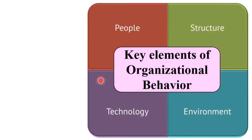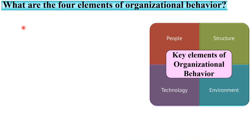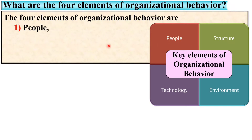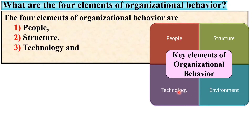From this figure you can understand there are basically four key elements of organizational behavior: people, structure, technology, and environment.